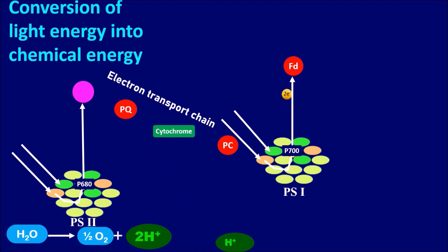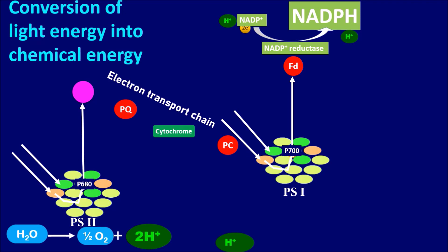Electrons which are excited by the PS1 will be received by ferridoxin. And in the presence of NADP oxidoreductase enzyme will be utilized to form NADPH which is considered as energy rich compound